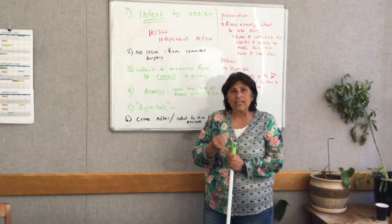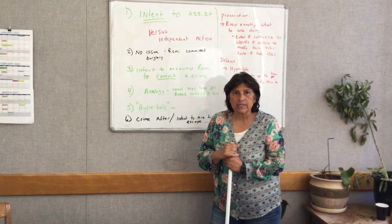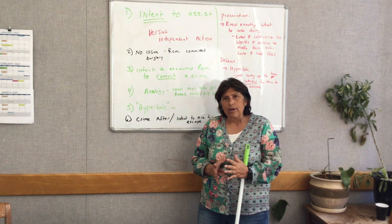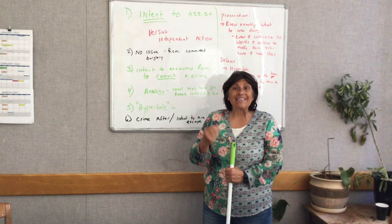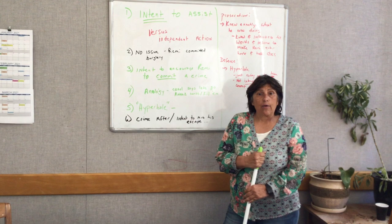For the defense you're going to do just the opposite. Lee had no intent for Remy to do any of these crimes. Lee was just kind of putting this out there and Remy acted on his own without Lee intentionally assisting him or wanting to help him. That's the first thing to look at when you're looking through the witness statements and the fact pattern.